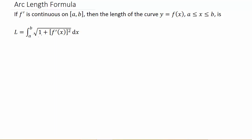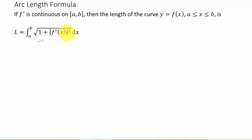This is the second example on finding the arc length of a curve. If the derivative is continuous on [a, b], then the length of the curve y = f(x) from a to b is the integral of the square root of 1 plus the derivative squared, dx. This also works if our function is in terms of y — it would be f prime of y squared and dy, taking the anti-derivative with respect to y.